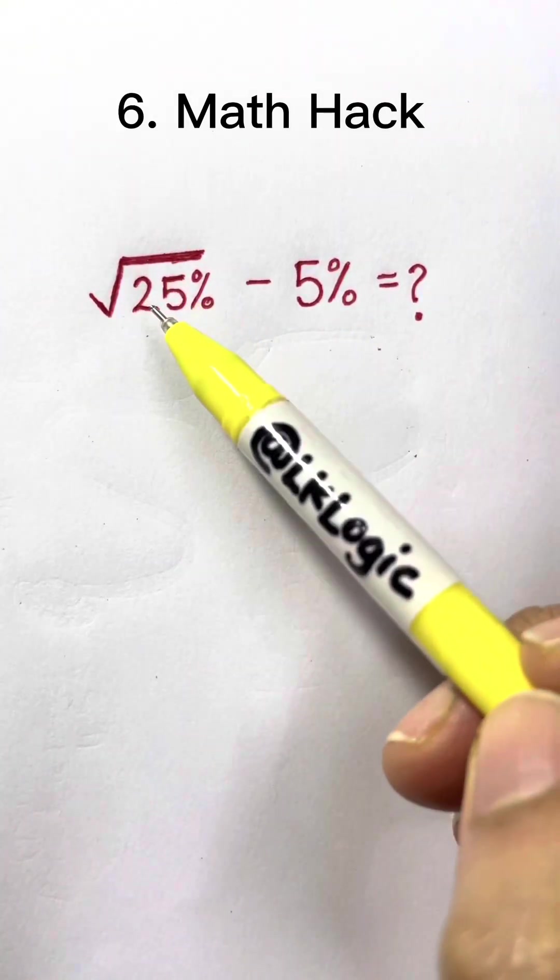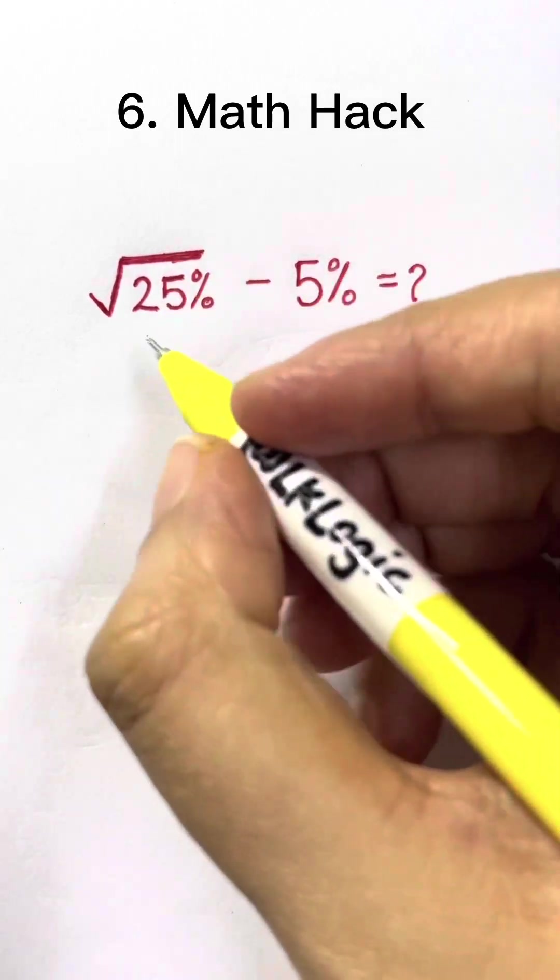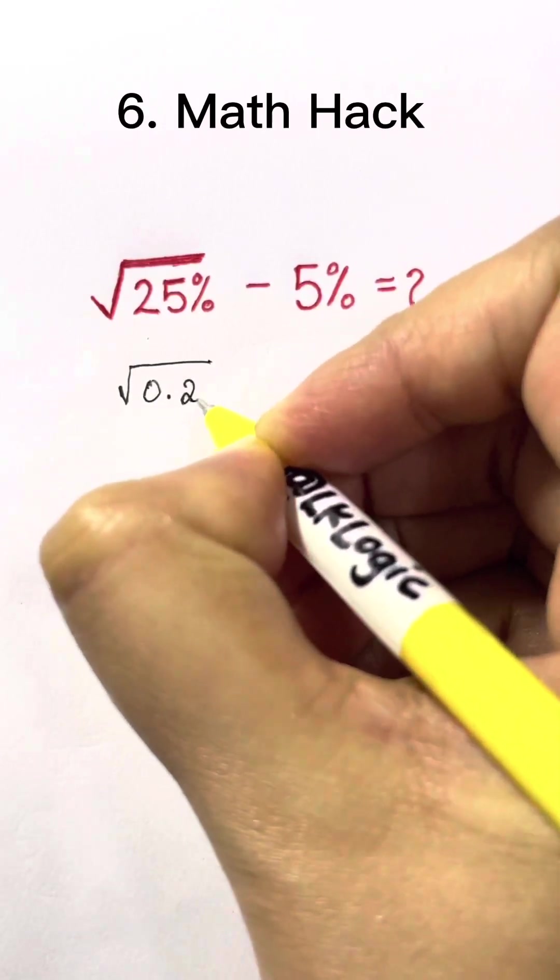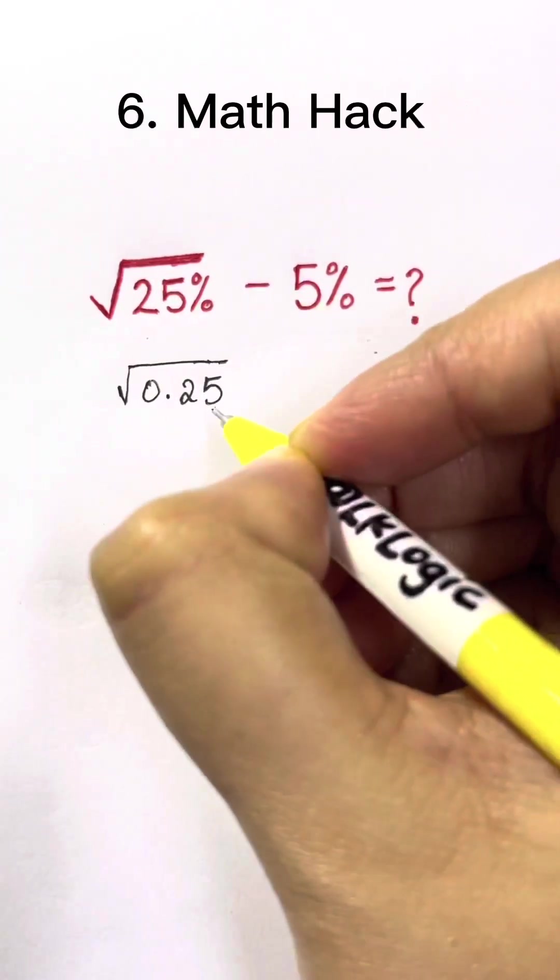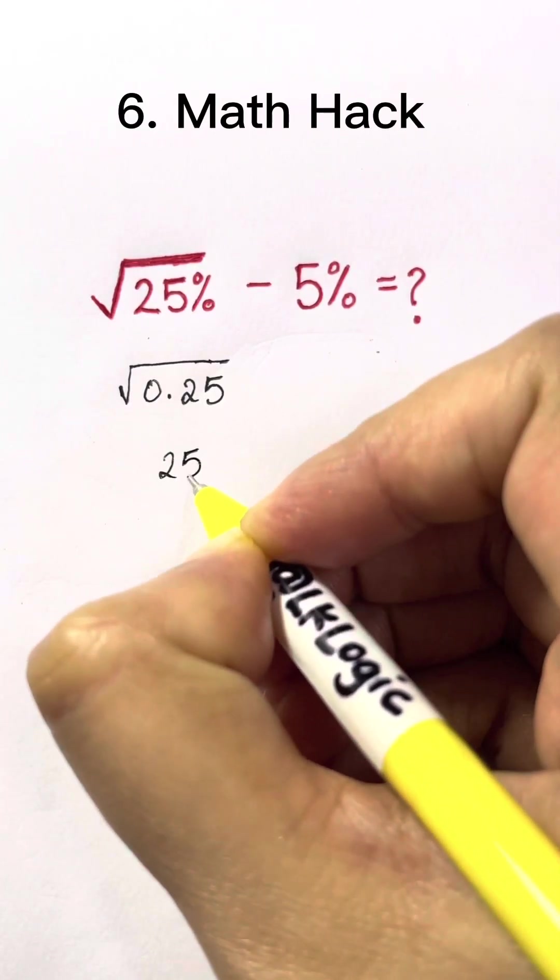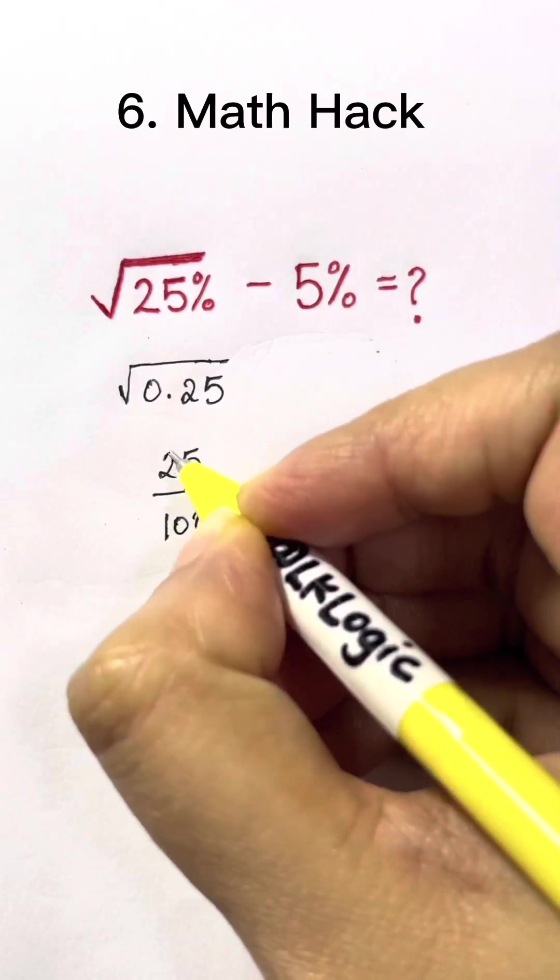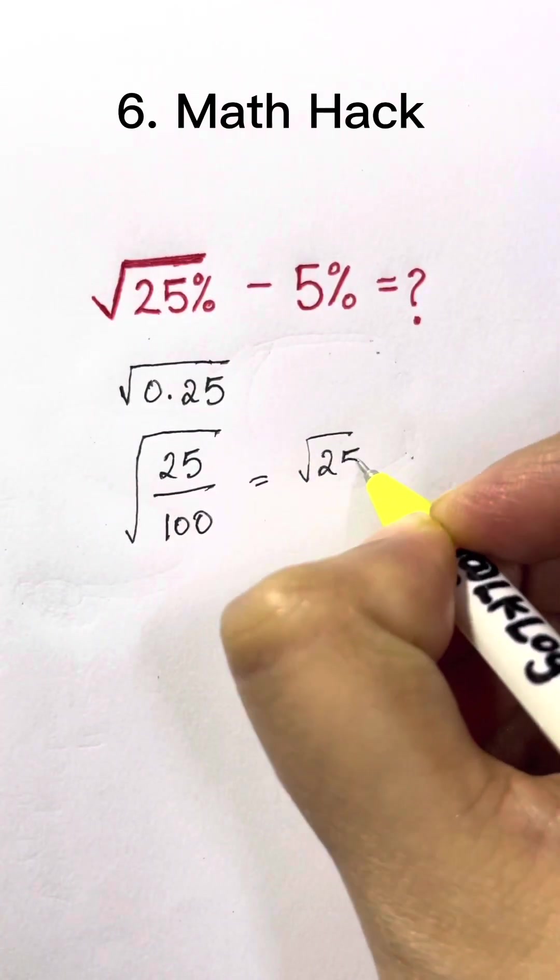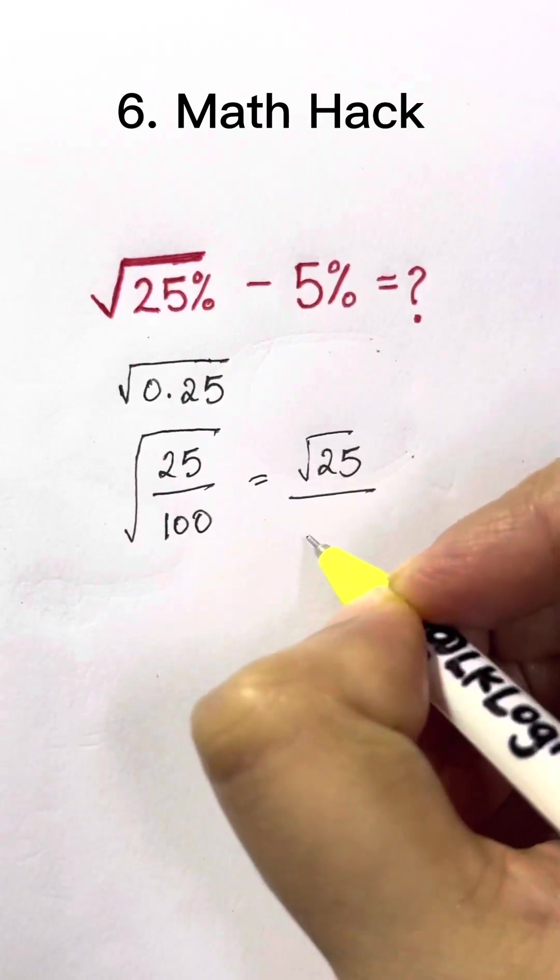What is square root of 25% minus 5%? Let's convert the percent to decimal first. 25% as a decimal is 0.25. Now we're going to convert the decimal to fraction. 0.25 as a fraction is 25 over 100. We have the square root. Now let's break them apart. We have square root of 25 over square root of 100.